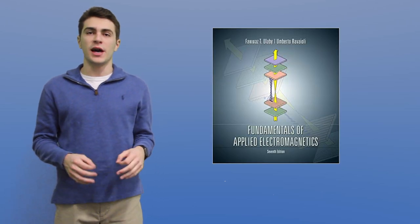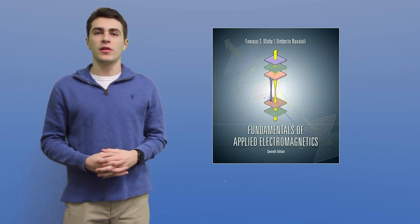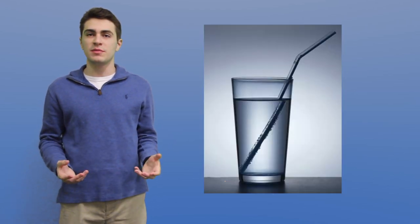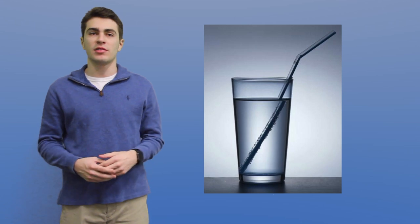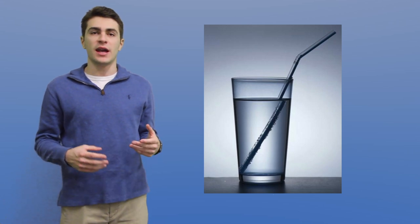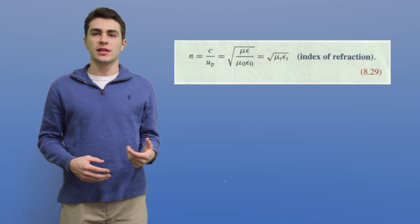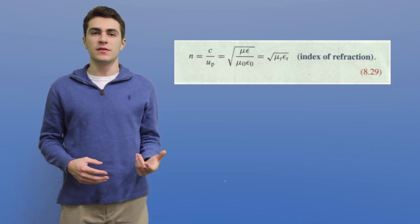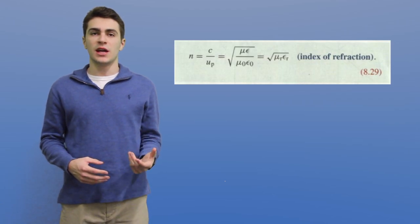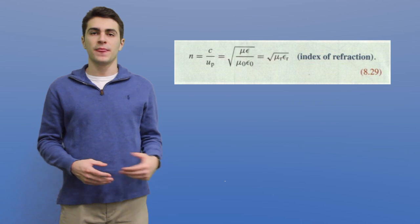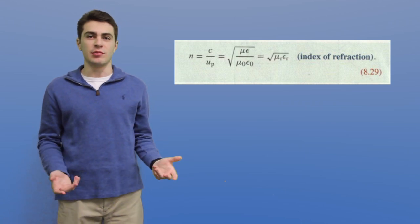Let's get into how an optical fiber works. In Chapter 8 of our textbook, Fundamentals of Applied Electromagnetics, we know that when light enters a medium, it causes it to refract. This is why the straw in your water appears to be misaligned, when in reality the light is traveling to your eye at a slightly different angle than before. A refraction index can be calculated with the formula N equals the speed of light divided by the phase velocity in the medium. But how does this relate to optical fibers?